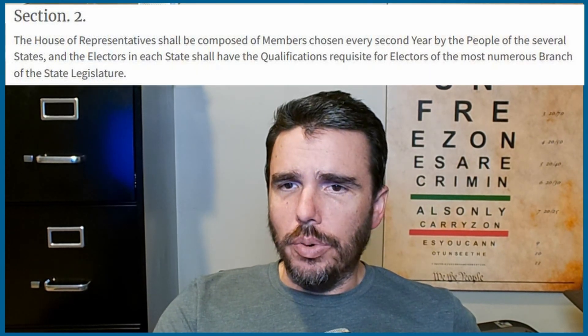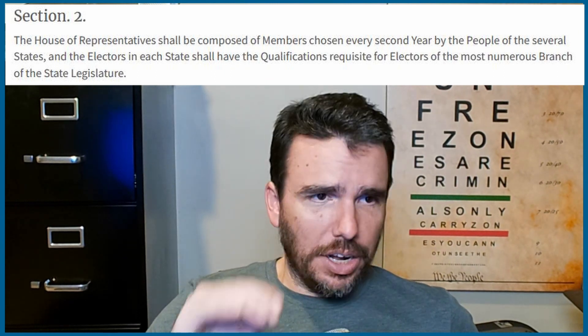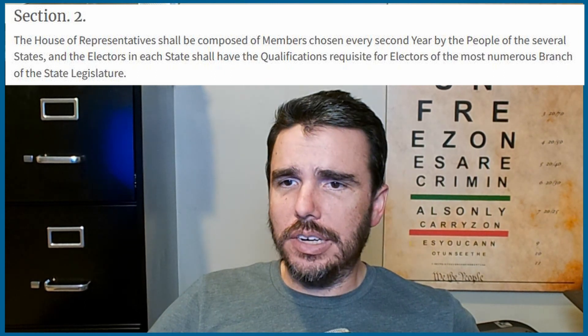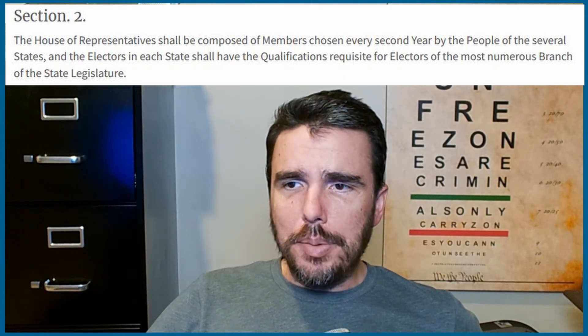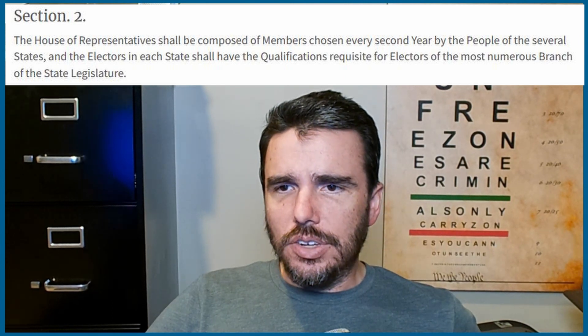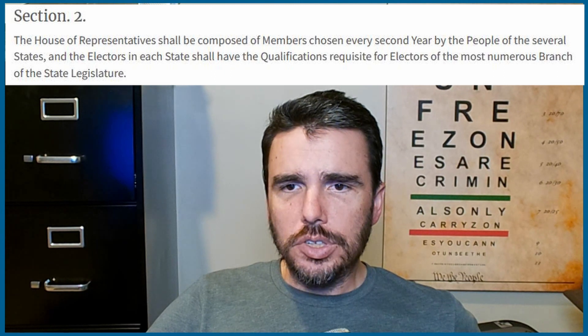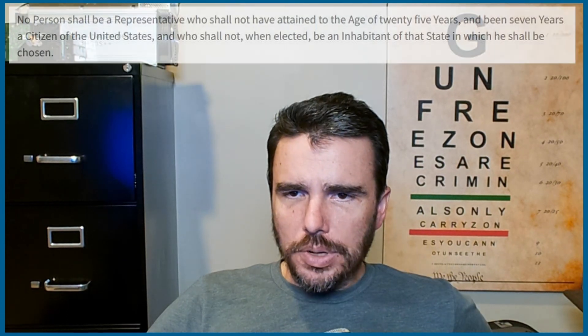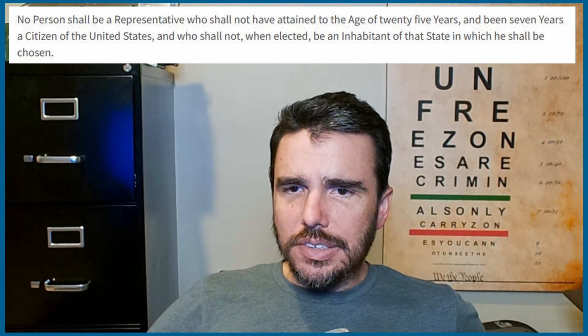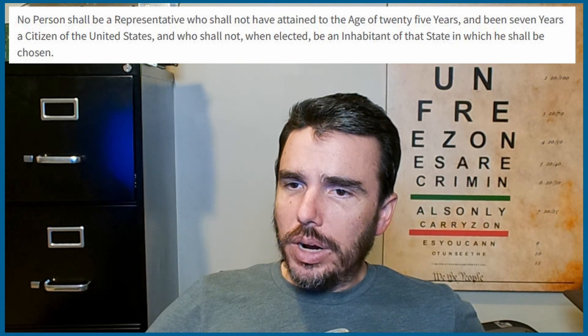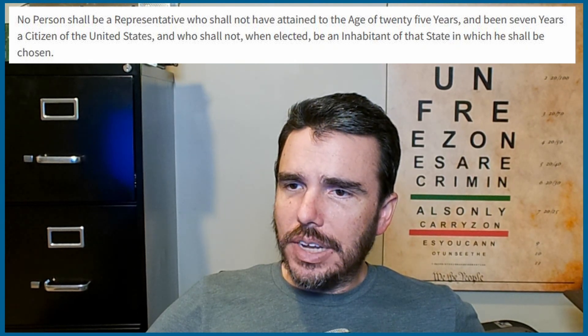Section Two sets up the House of Representatives. Members shall be chosen every second year, establishing their election cycles. No person shall be a representative who has not attained the age of 25 and been seven years a citizen of the United States, and who shall not, when elected, be an inhabitant of the state in which they are chosen. Those are the requirements for running for office.